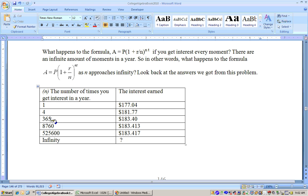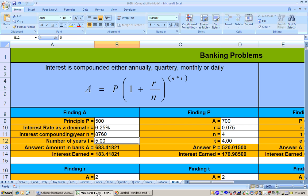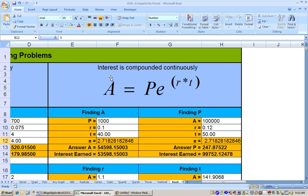When you jump it up from getting interest 365 times a year daily to getting interest 8,760 times a year every hour, it only jumps up by a penny. If we figured out and multiplied it by how many minutes there are in a year, then it doesn't even jump up by a penny. So as this is approaching infinity, we use a different section of the sheet, and we use this area right here.